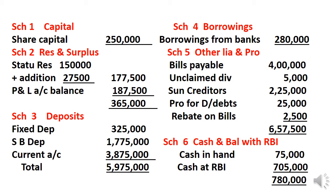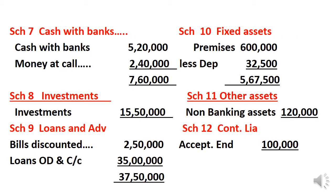Schedule 6 — Cash and Balance with RBI: Cash in Hand, Cash at RBI. Schedule 7 — Balance with Banks and Money at Call and Short Notice: Cash with Banks 5,20,000, Money at Call 2,40,000, Total 7,60,000.